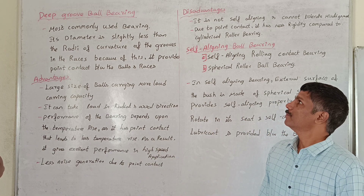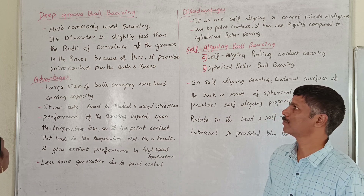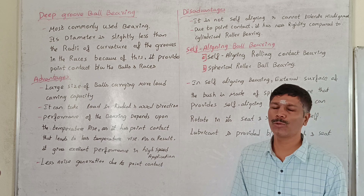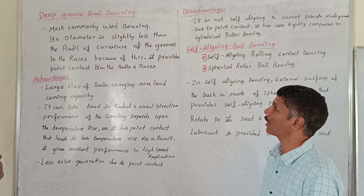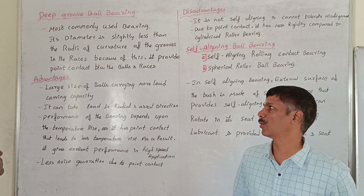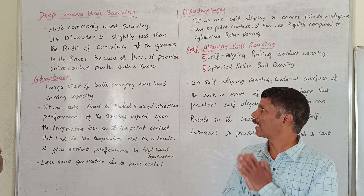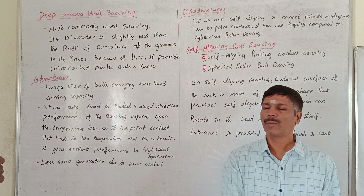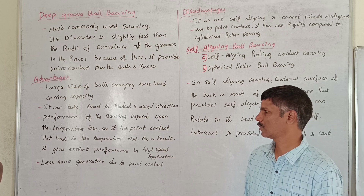Deep groove ball bearing is the most commonly used bearing. Its ball diameter is slightly less than the radius of curvature of the grooves in the races. There is a wide range of point contact between the balls and the races. The advantage is large size of balls carry more load. It can take load in both radial and axial directions. Performance depends on temperature rise; point contact leads to less temperature rise, making it excellent for high speed applications.